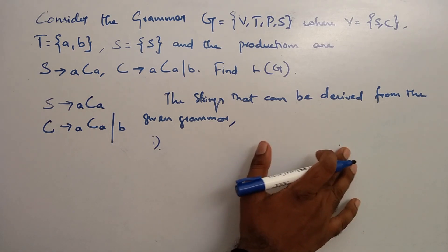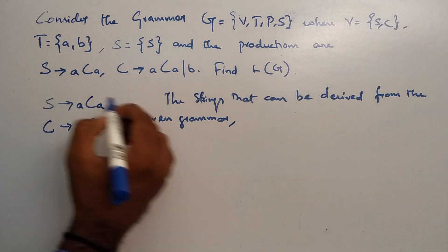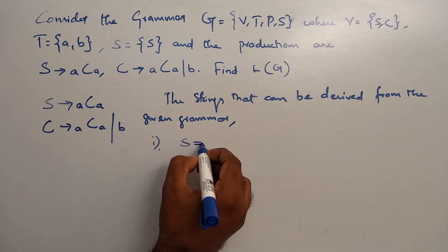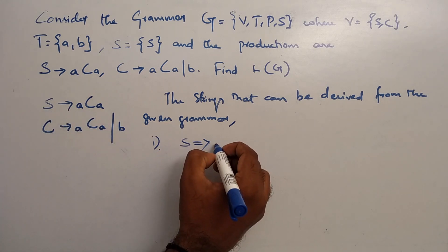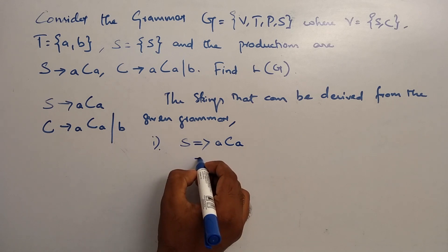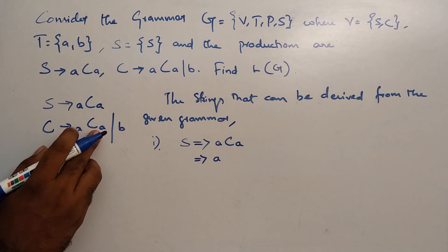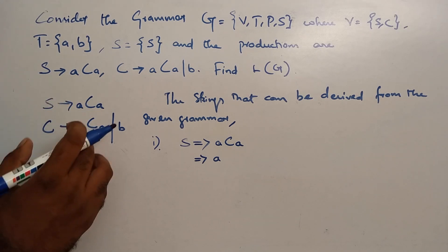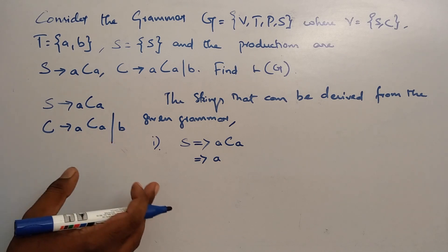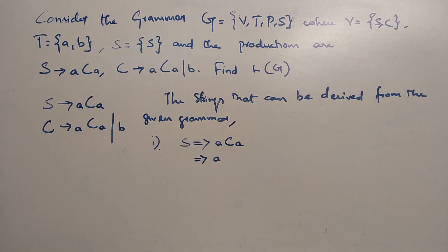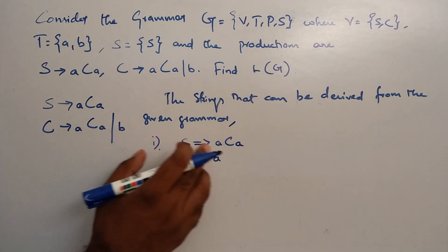We start with the derivation S, because the starting production is S. C has two values — one iterative and one recursive. To find the minimum length string, we start with the derivation and stop immediately. If C tends to B, then stop.